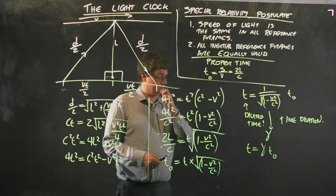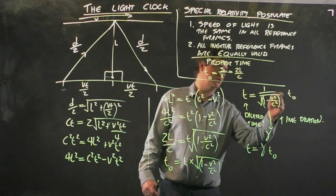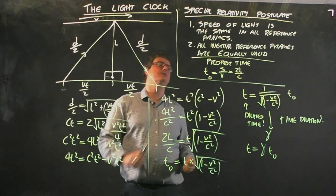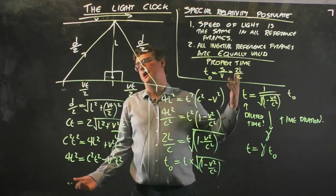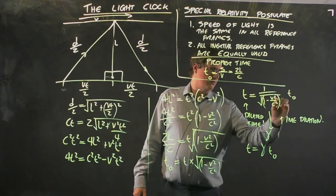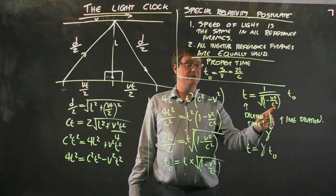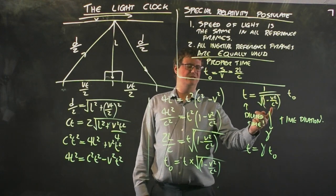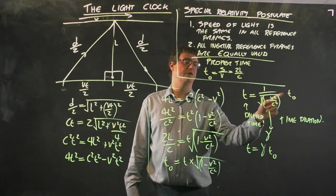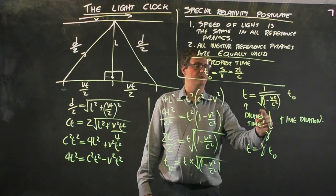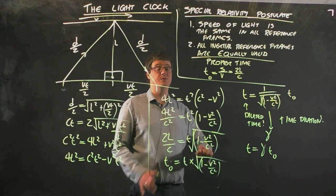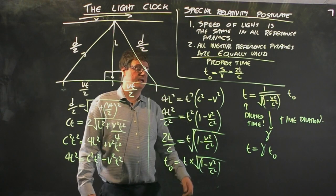There are a bunch of consequences of this. For a V that's very low, if you're moving very slowly relative to this light clock, say a meter a second, 1 divided by 300 million is pretty close to 0. 1 take pretty close to 0 is 1. The square root of 1 is 1, so T is basically equal to the proper time. If you're moving slowly, relativistic effects don't happen.